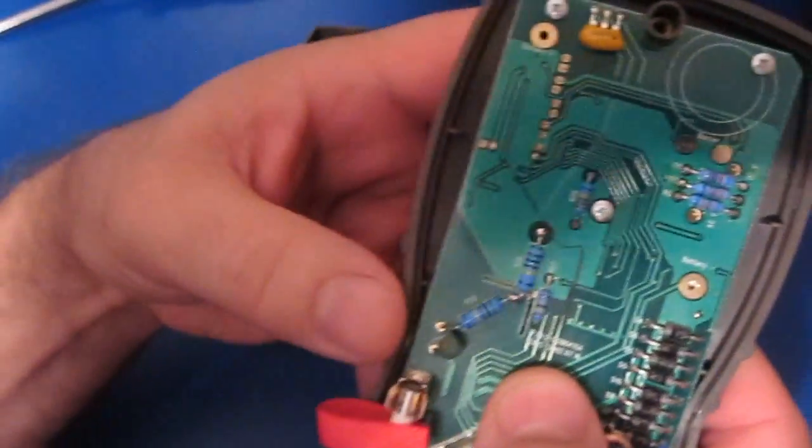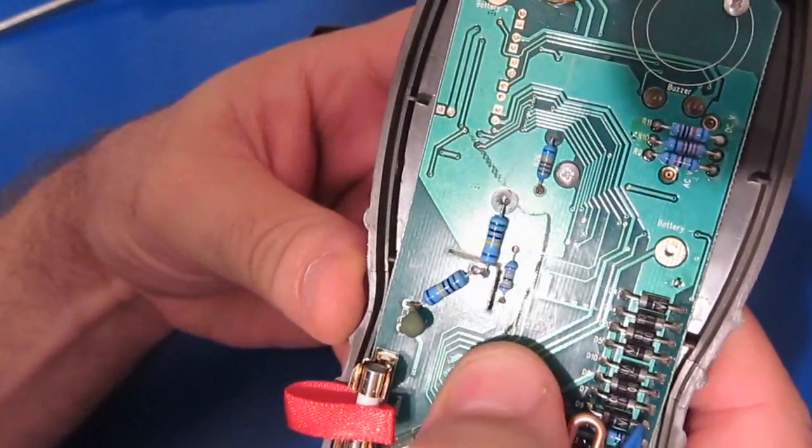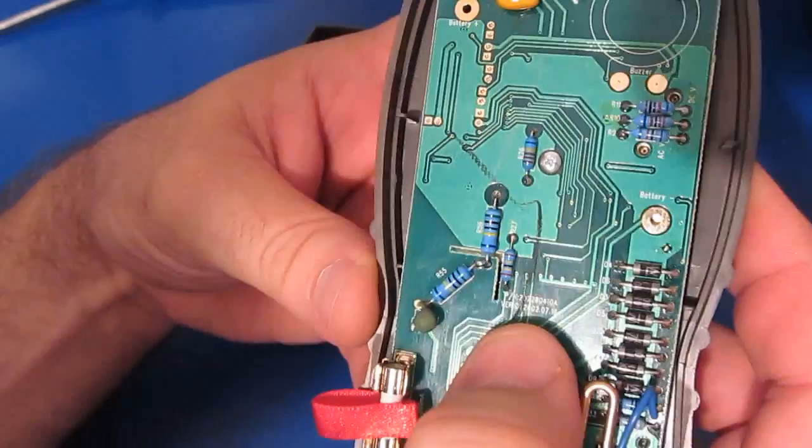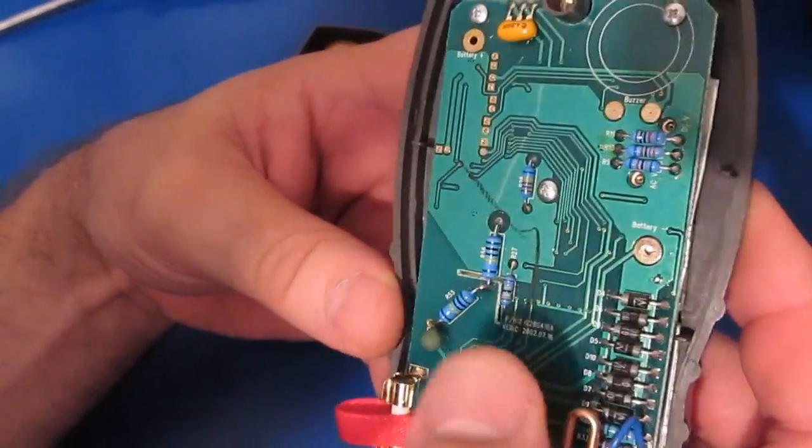We notice the date here. So it says 2002 0716. I'm assuming that's when the circuit board was last revised.